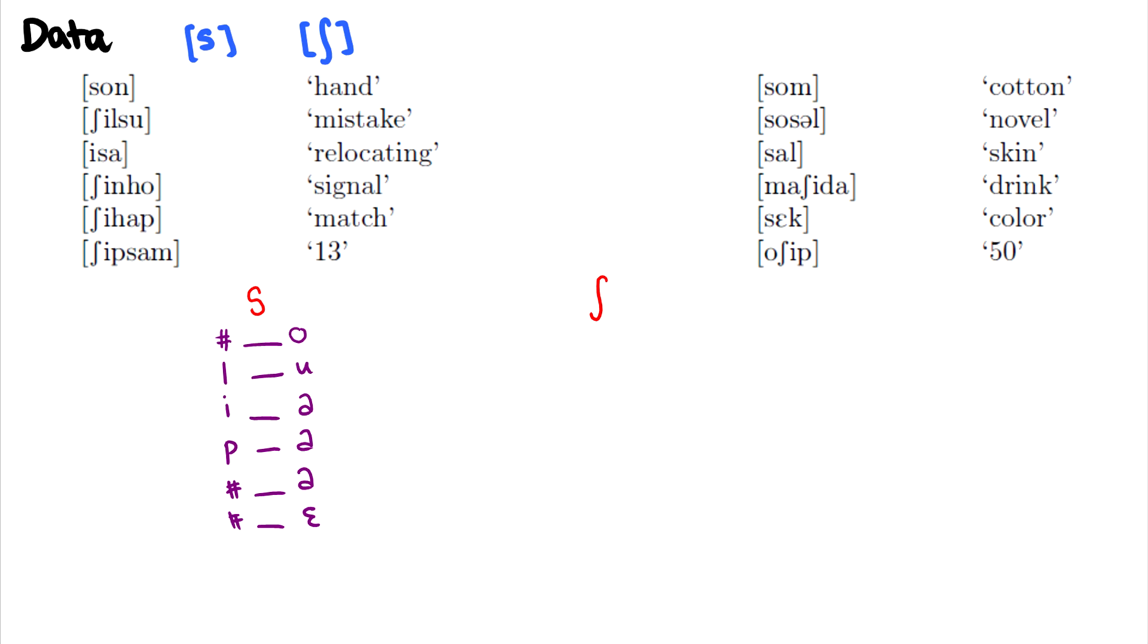Let's work on sh. So shilsu is at the beginning of the word, and there's an i after. In shinho, shihap, and shipsam, it's all the same story. So we see that three more times. In mashida, I see an a before and an i after. And then in o ship, I see an o before and an i after.